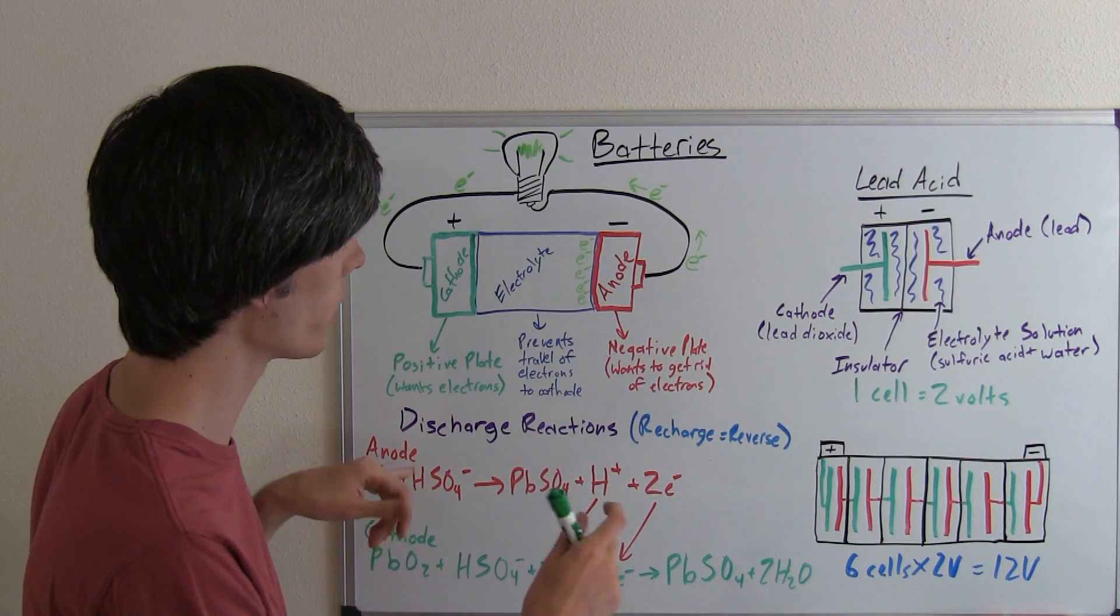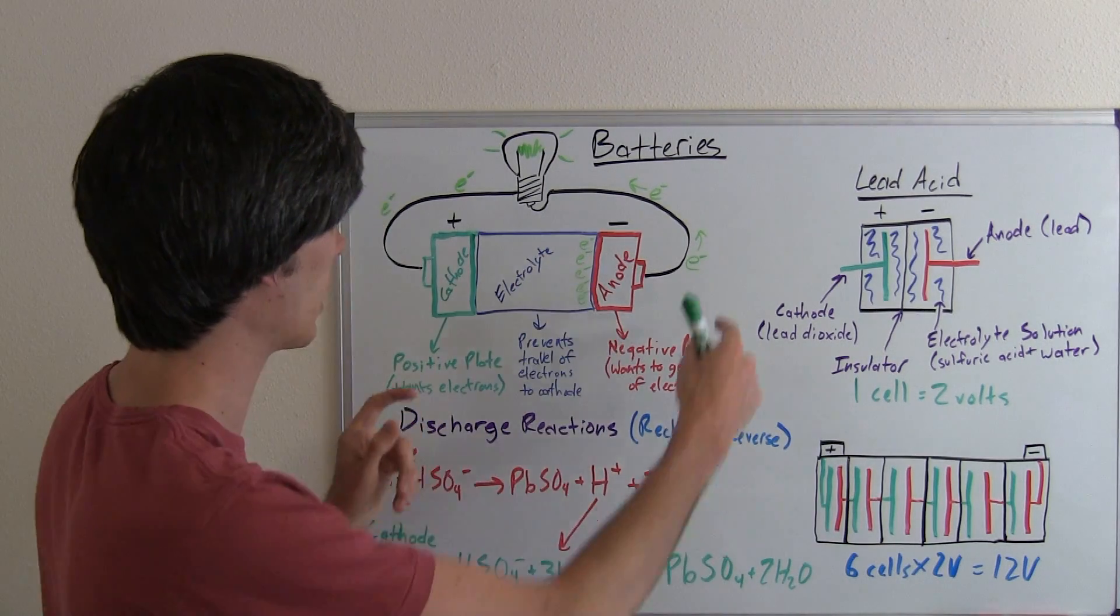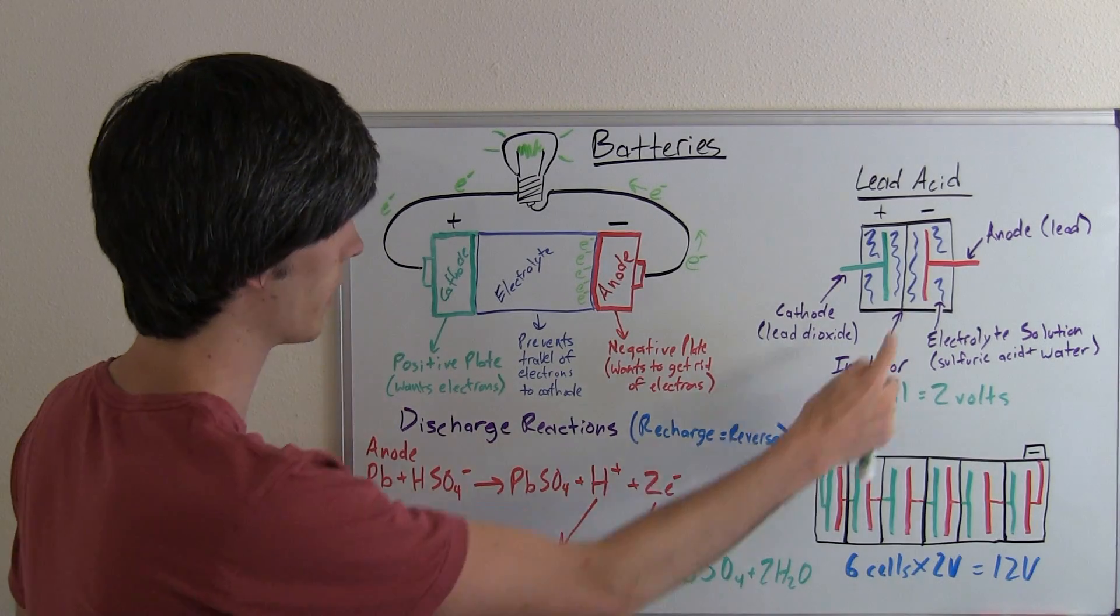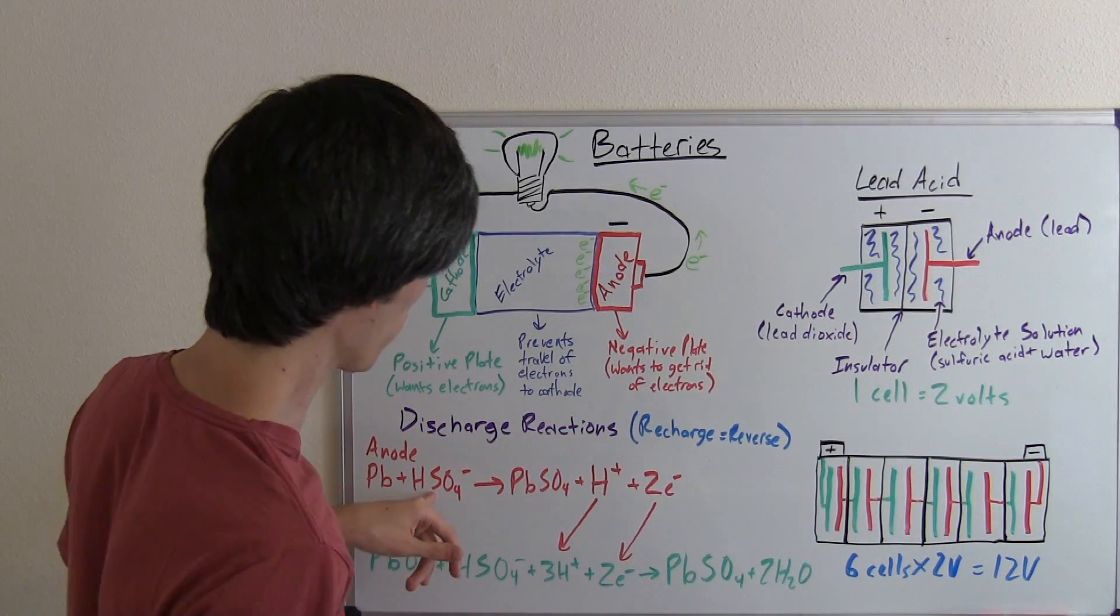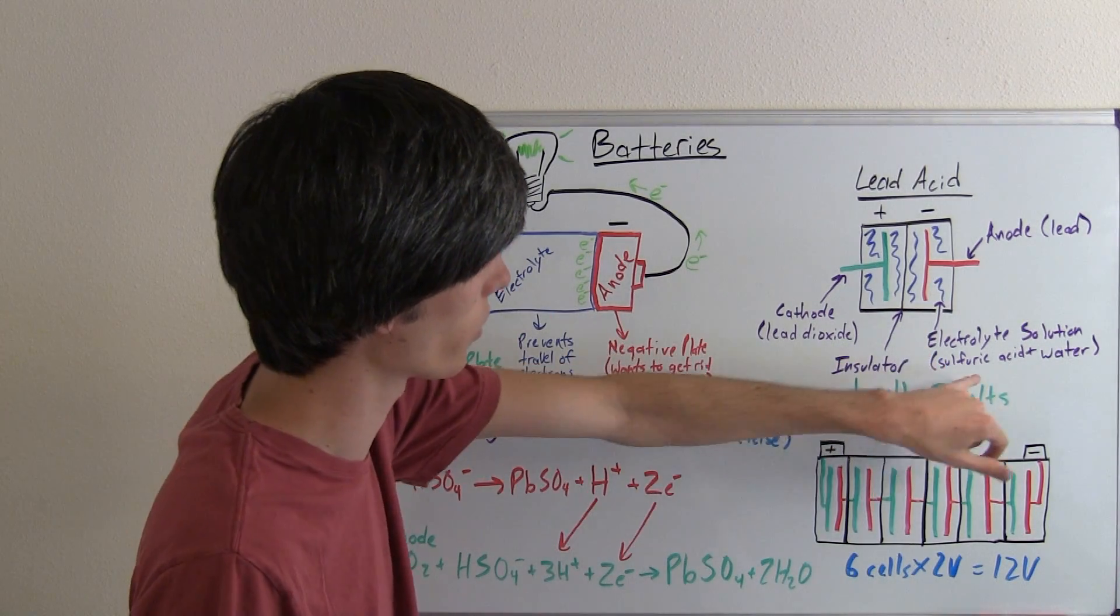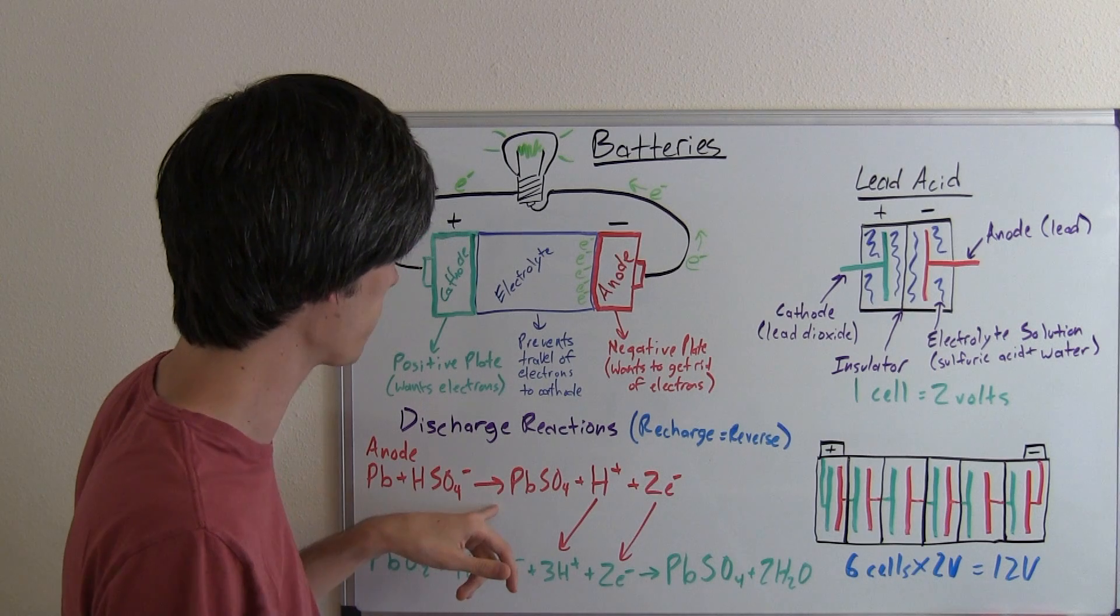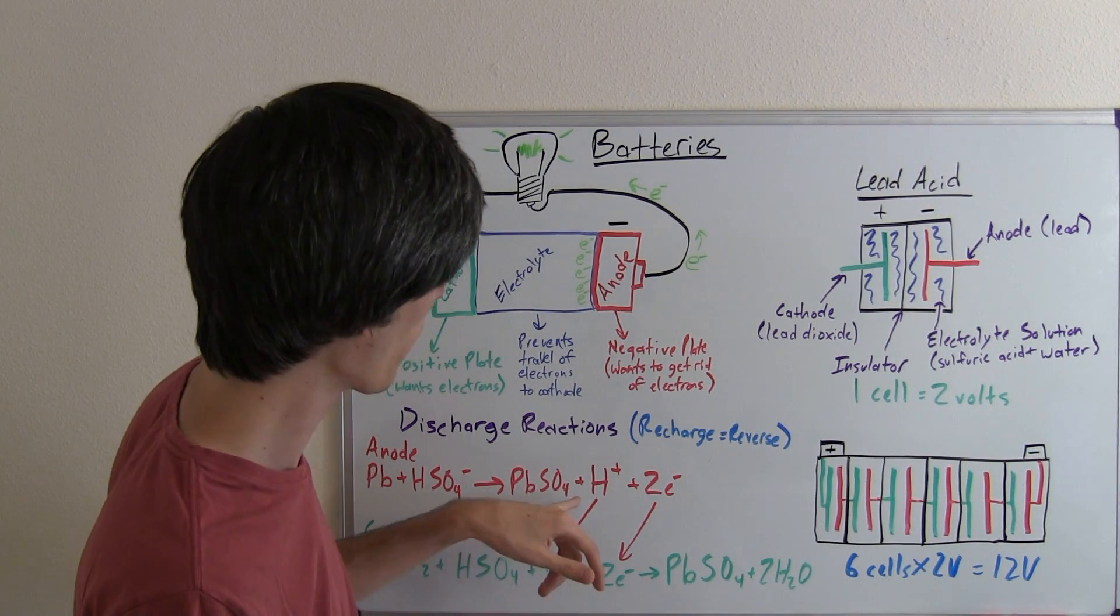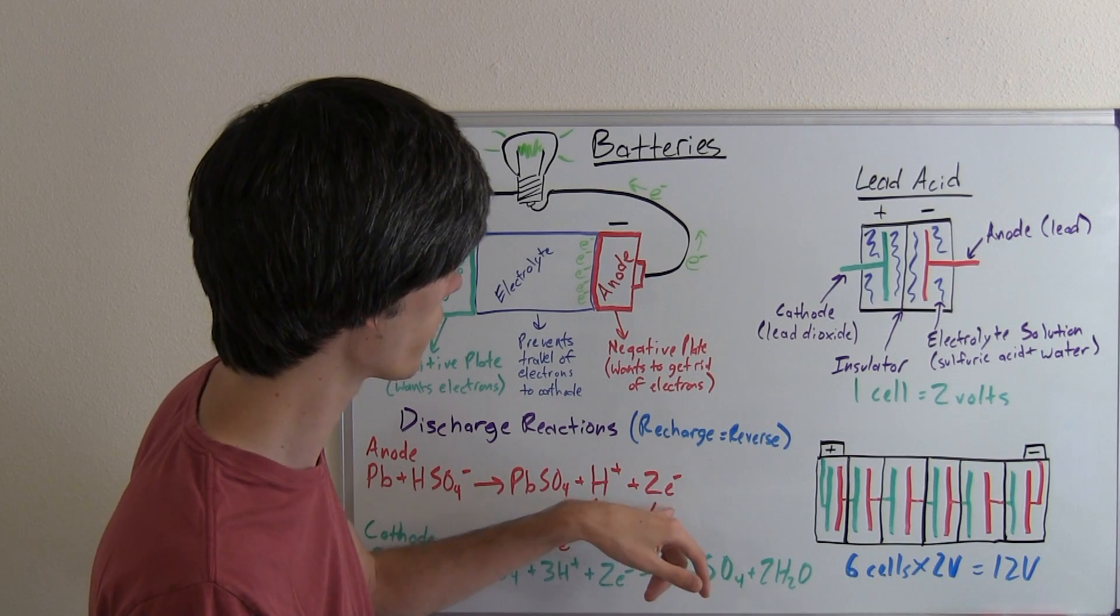Basically, when you discharge, when you connect these two and you allow electrons to flow from the anode to the cathode, what happens is the lead from this plate mixes with the sulfuric acid, which is the electrolyte solution, sulfuric acid and water, it mixes with that, and it forms PbSO4 plus a hydrogen plus two electrons.